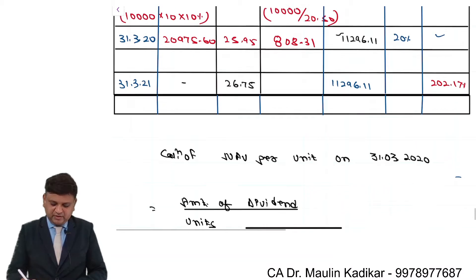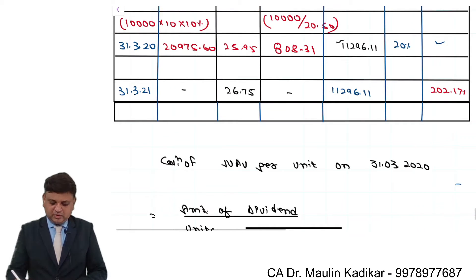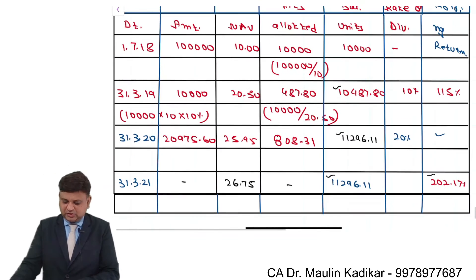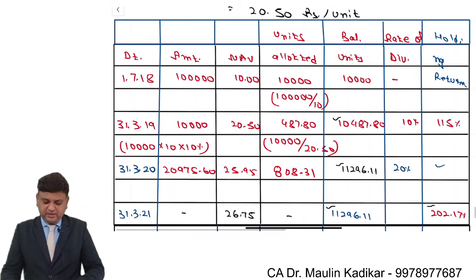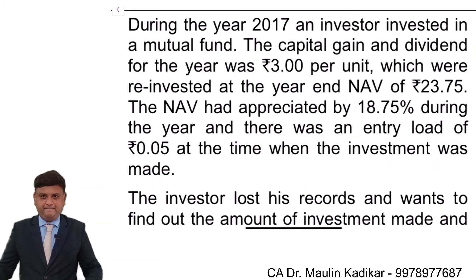No dividend was given on 31st March 2021. The return information provided to us for the holding period is 202.17%, and accordingly the NAV per unit on that date is Rs. 26.75.